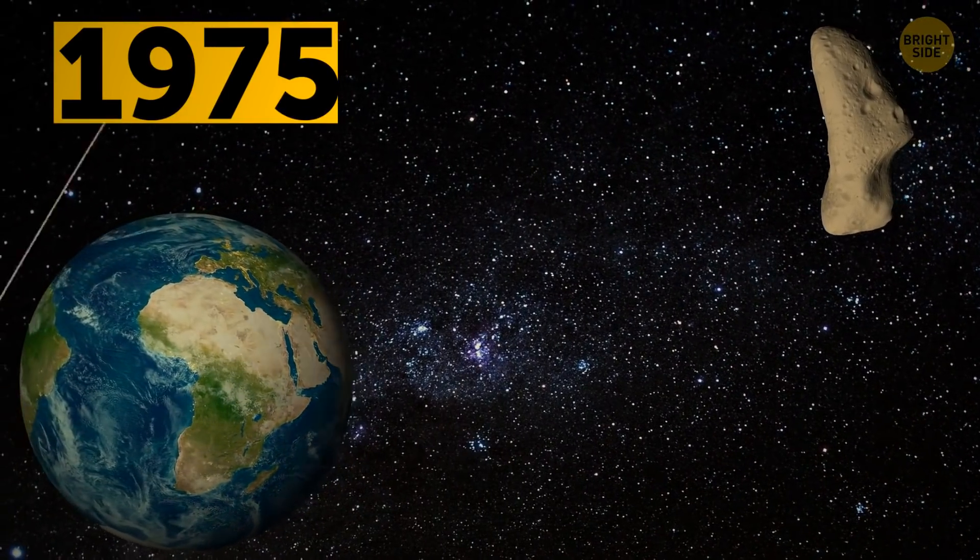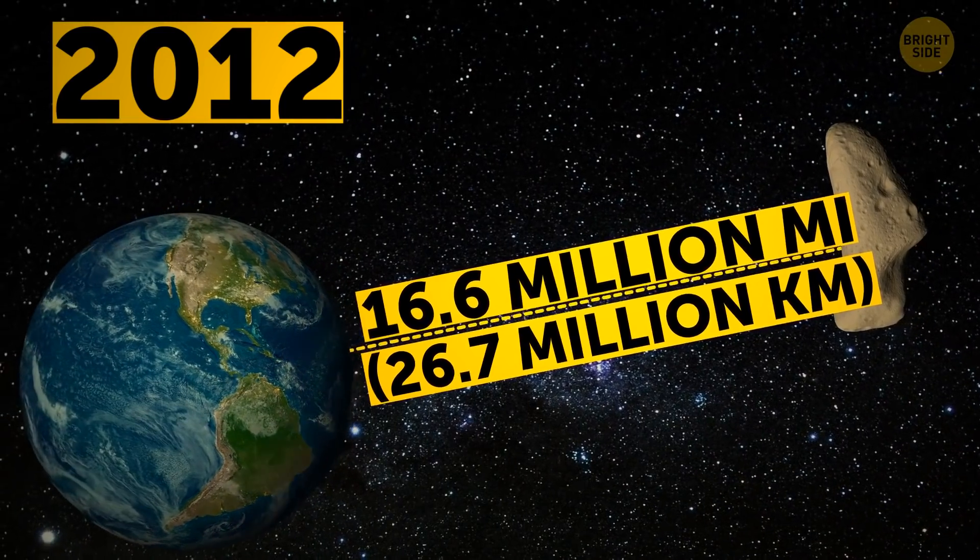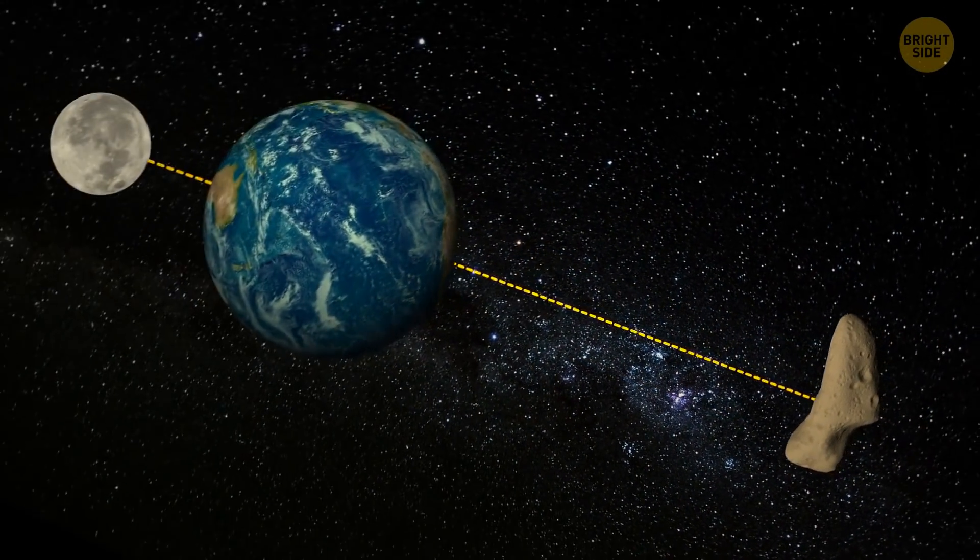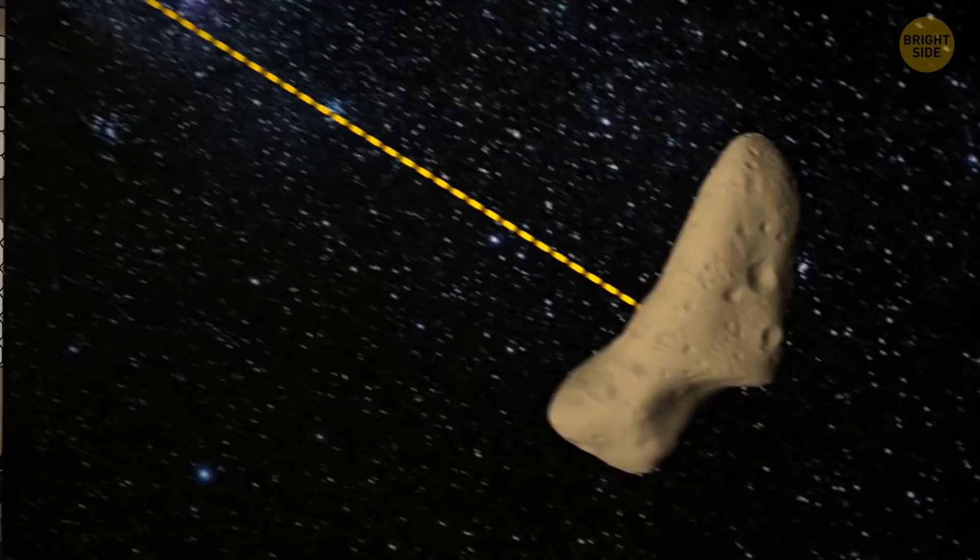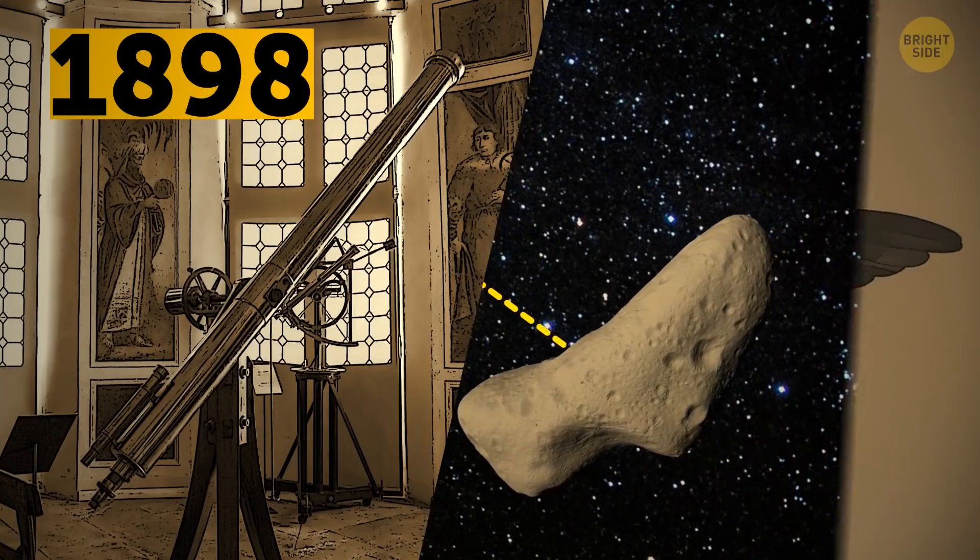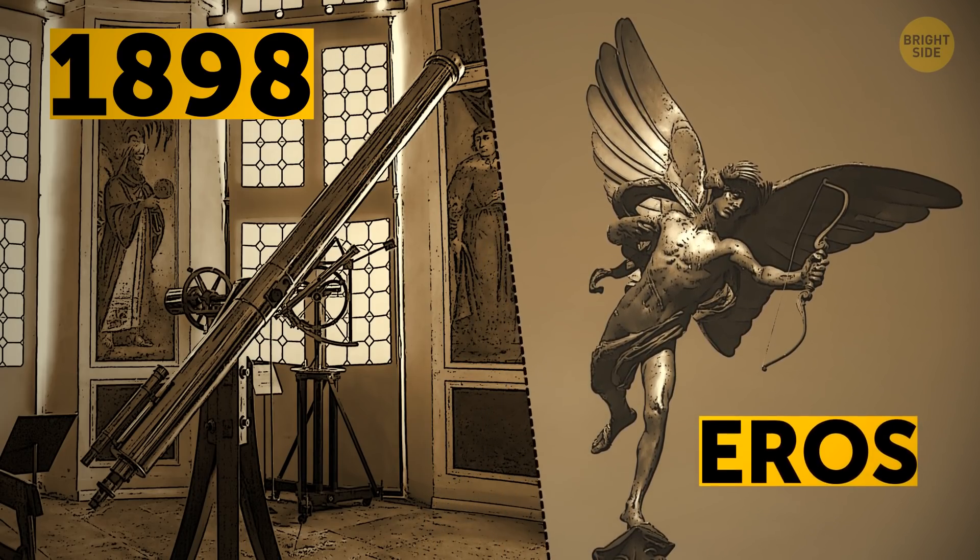Since 1975, the closest Eros got to Earth was in 2012, around 16.5 million miles away, which makes it about 70 times the average distance to the Moon. It was discovered in 1898 and named after the Greek deity of love.